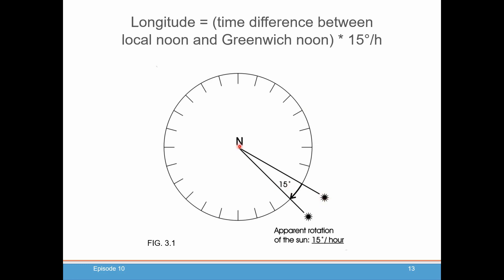So if we know — we take a reference line, say the Greenwich meridian — and we know how many hours it's been since the Sun has crossed the meridian at Greenwich and it crosses our meridian, if we take that time and divide it by 15 degrees per hour, we'll know exactly where our longitude is.